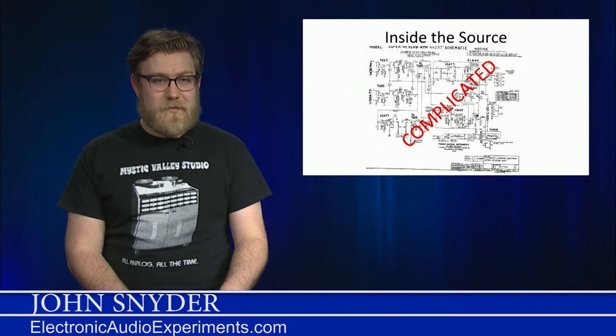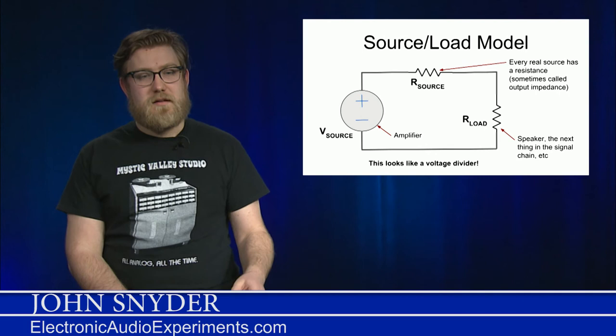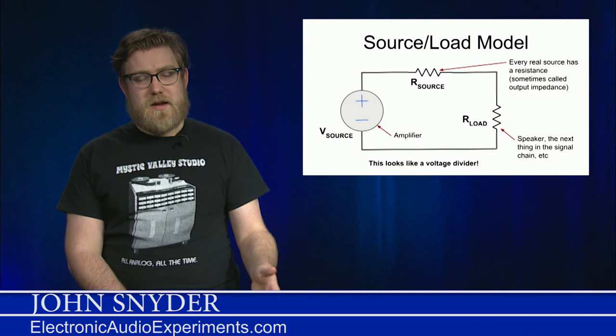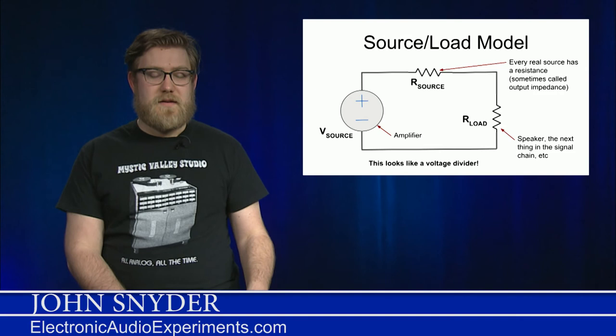We have our source voltage, and then we have the source resistance. Any real source is going to have a resistance as part of its model in order to show you how much current can really come out of it. Again, V equals IR. That way, if you have a power supply that's rated at something like one amp, that source resistance comes from that. If you draw more than one amp, you're going to lose power. You won't be able to provide what it says on the box.